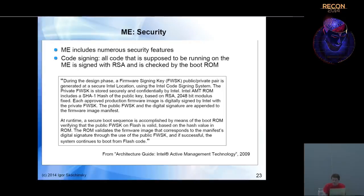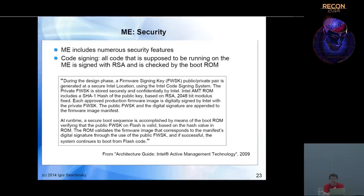After analyzing and reading documentation, I identified ME's security features. The major feature is code signing: all code running on ME, except the unmodifiable boot ROM, is signed with RSA. Intel signs it with their private key, and the public key is stored in the firmware header. You cannot replace the public key because its hash is still checked by the boot ROM — they only store hashes of allowed public keys in boot ROM to save the two kilobytes that a full key would require.